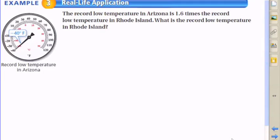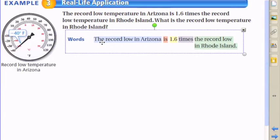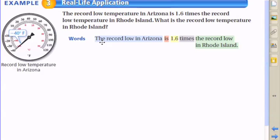I see there is an image on the left side showing the record low temperature in Arizona. How can we turn all these words into an equation? Let's first identify the important things. The record low in Arizona is obviously something important.